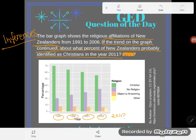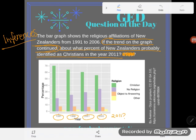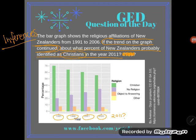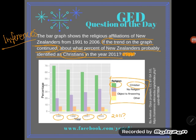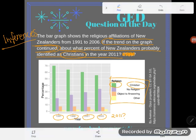Now, we want to compare the group the question asks about: about what percent of New Zealanders probably identified as Christians? According to the key, Christians are the green group, so we're looking at the trend and pattern of the green bars.